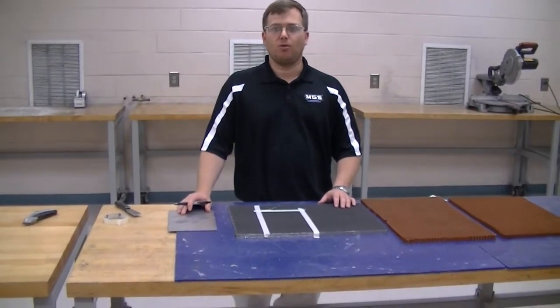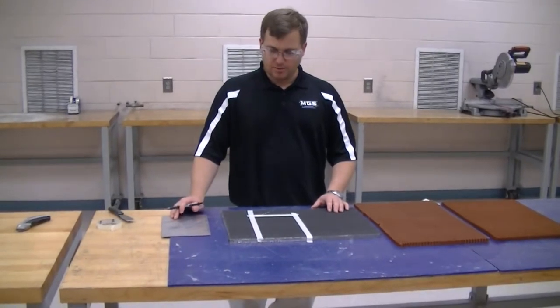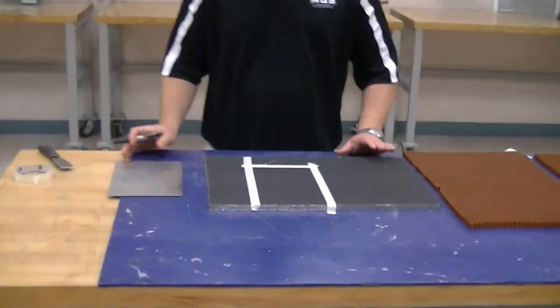The third method of cutting honeycomb core requires a band saw. One of the obstacles we run into is knowing where to cut the core in order to maintain a perfect straight line.